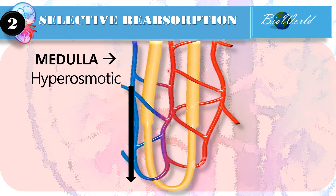The filtrate will travel down the descending limb of the loop of Henle. The filtrate will contain urea, water, and sodium ions. Since selective reabsorption involves water and sodium ions, I will remove urea from our discussion for now. The loop of Henle enters the medulla of the kidney, and the medulla is hyperosmotic. This means that the cells of the medulla have the highest concentration of sodium ions, making them have extremely high osmotic concentration. In comparison, the filtrate has low osmotic concentration.